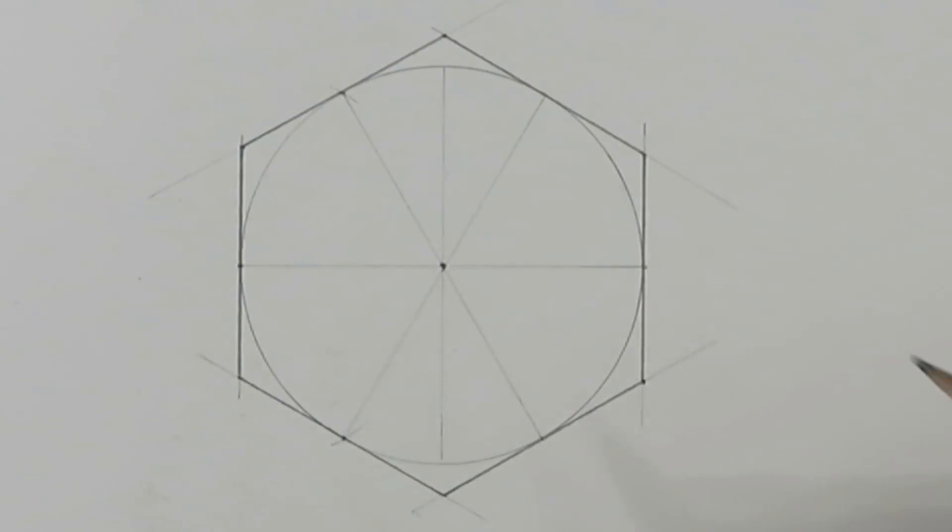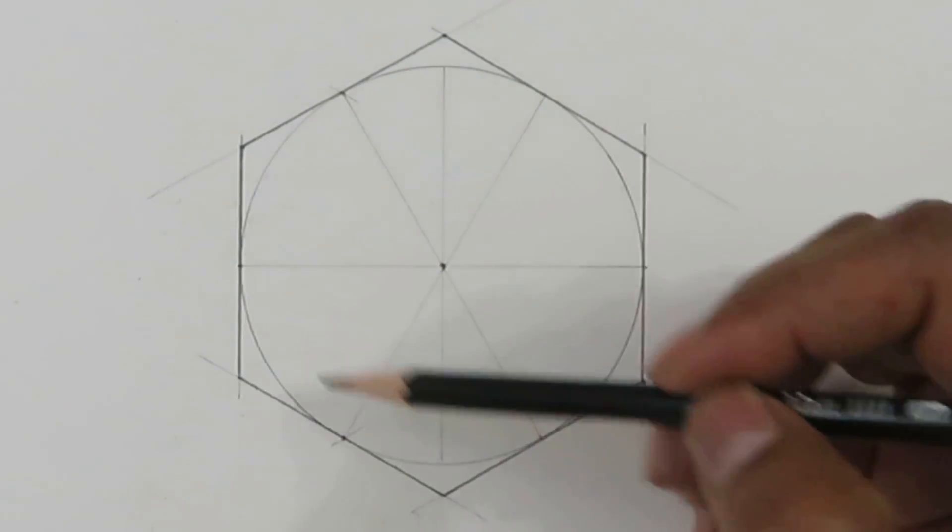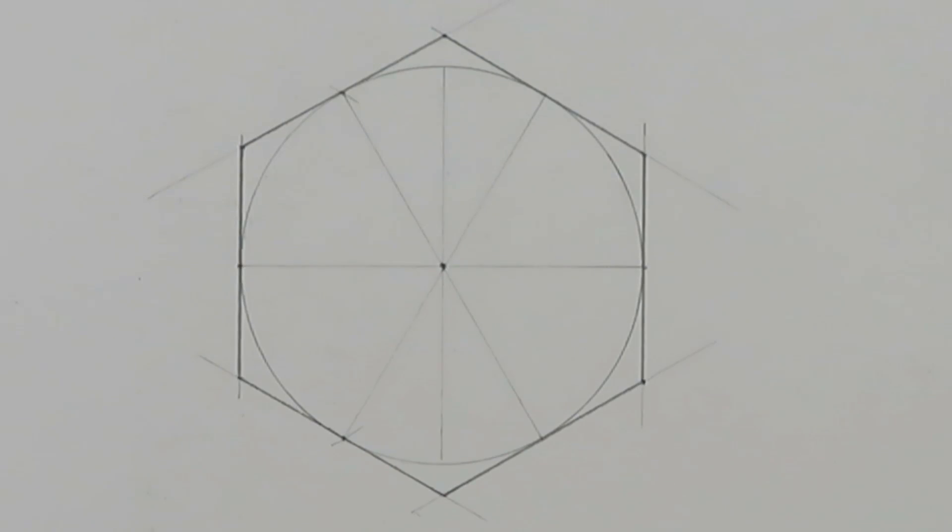So we have circumscribed a hexagon around a circle. This is the easiest method for this problem. Thank you very much for watching this video and for liking this video. If you have any comment or question, please write them down below in the comment section. Thank you.